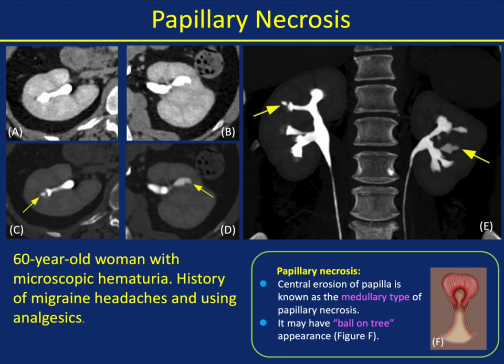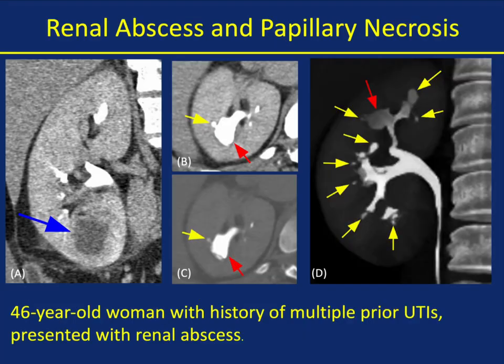Here's a patient with a history of migraine headaches and analgesic use. This is papillary necrosis with the central type of papilla erosion, known as the medullary type — that ball-on-tee appearance, like a golf ball. You can see it in one calyx or in multiple calyces, very nicely shown in this example where both kidneys are involved and multiple calyces.